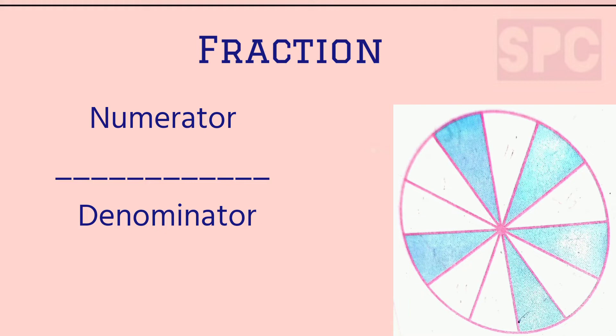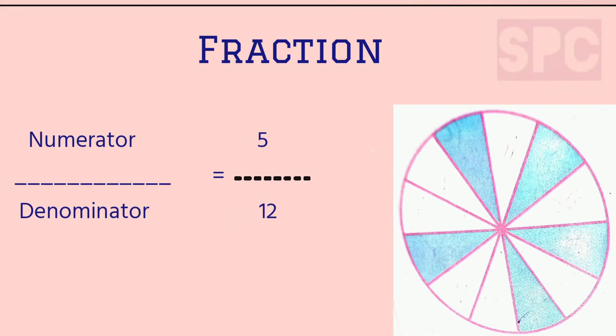The fraction showing the shaded parts in this figure will be 5 by 12. Similarly, if we have to write a fraction showing the unshaded parts, then in that case, denominator will remain the same — which is the total number of parts in which the circle is divided — but the numerator will change, as instead of the shaded parts, now we have to consider the number of unshaded parts. Therefore, the fraction showing the unshaded parts in this circle will be 7 by 12. 7 is the total number of unshaded parts and 12 is the total number of parts in which this circle is divided.